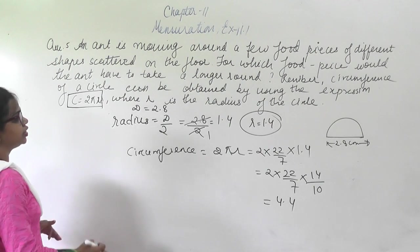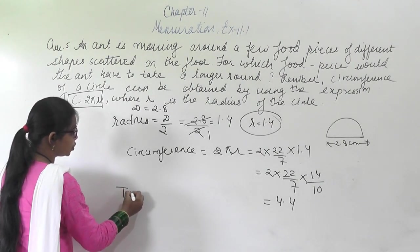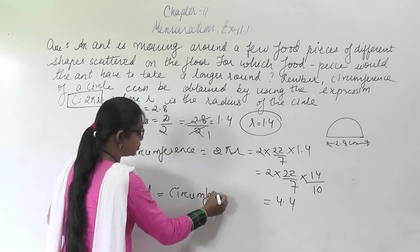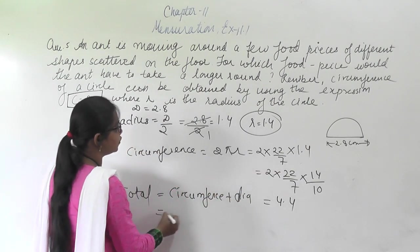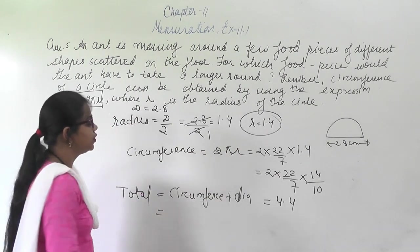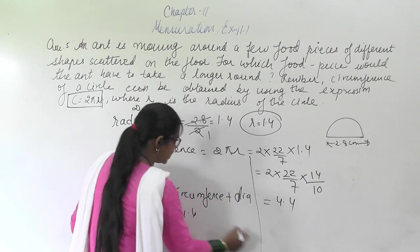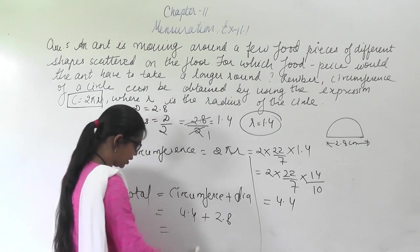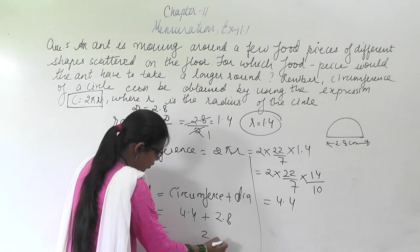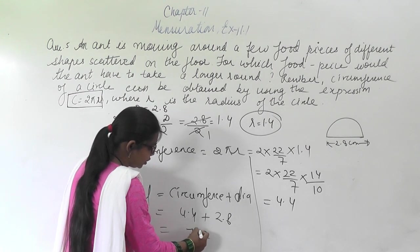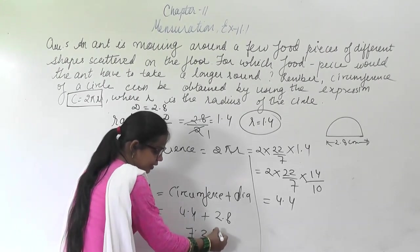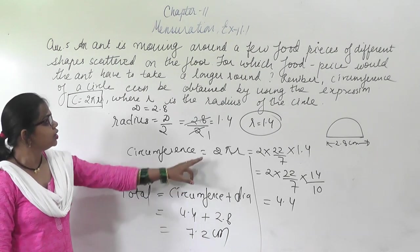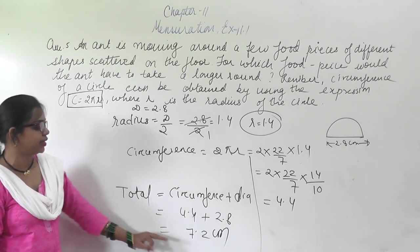Now we have to find the total distance. The total equals the circumference plus the diameter: 4.4 plus 2.8, which gives 7.2 cm. So the total distance covered, including the circumference of the semicircle and the diameter, is 7.2 cm.